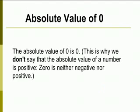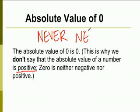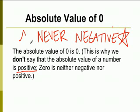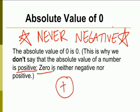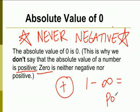The absolute value of zero is zero. This is why we don't say the absolute value of a number is always positive, because zero is neither negative nor positive. But the absolute value of a number is never negative. So it really is always positive — but when it's zero, we can't say it's positive. However, any other number from one to infinity will always equal a positive number.